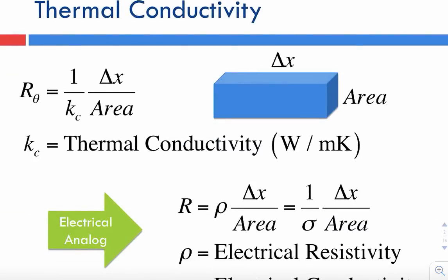Given the dimensions of a solid, if you are interested in finding the thermal resistance of a rectangular block — assuming heat is flowing along that block — we can calculate its thermal resistance if we know the dimensions and the thermal conductivity of the material, given in watts per meter Kelvin. The thermal resistance R is given by 1 over the thermal conductivity times delta x, the length of the block, divided by the cross-sectional area.